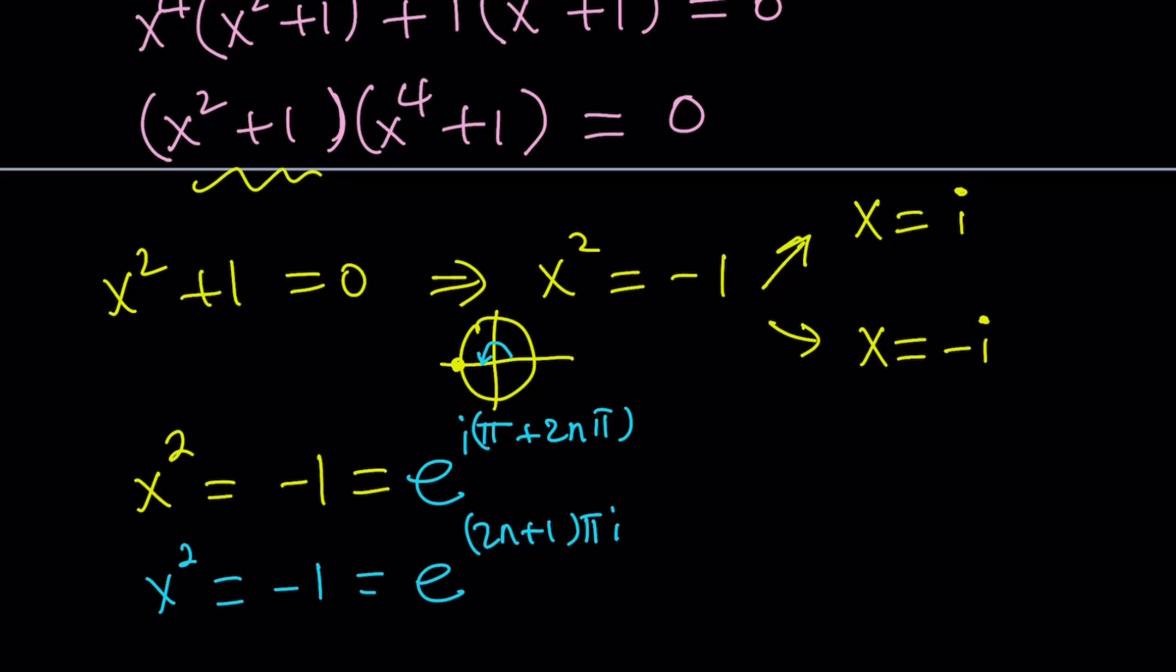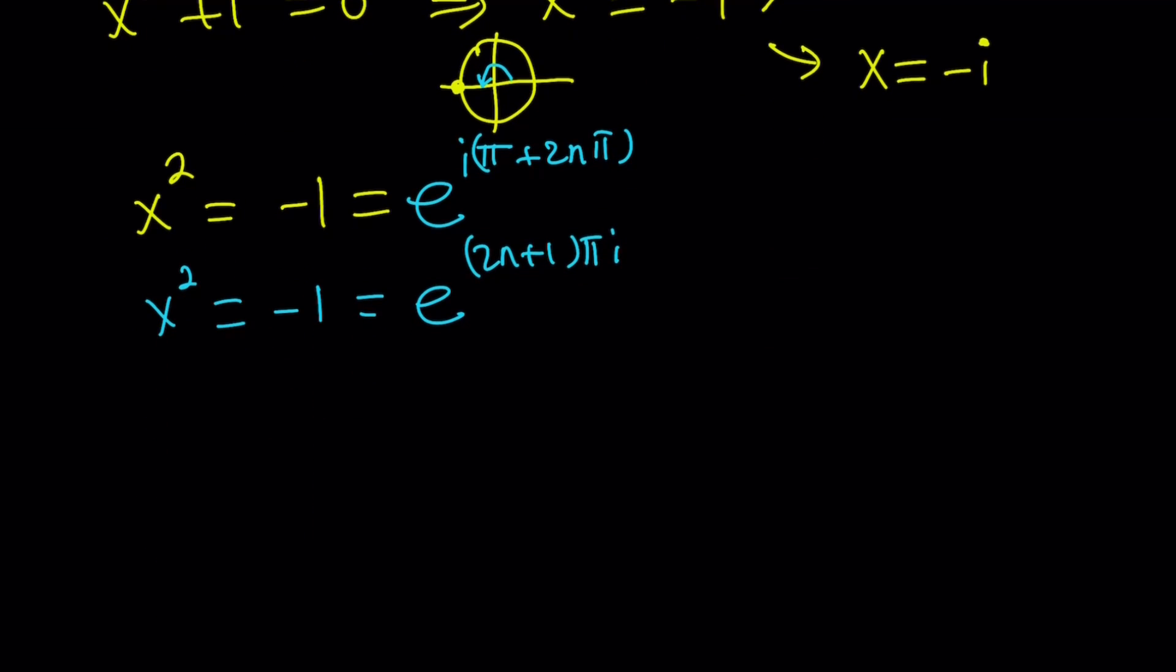And obviously, we do want to take the square root of this. And to take the square root of something like a complex exponential, you have to basically cut the angle in half or raise it to the power 1/2.